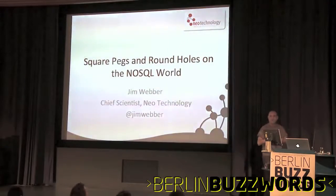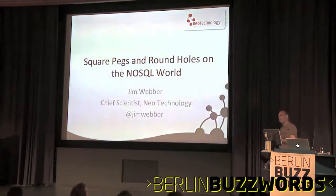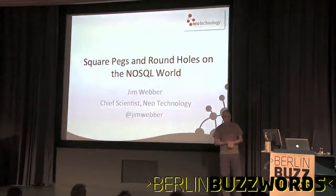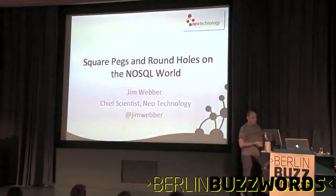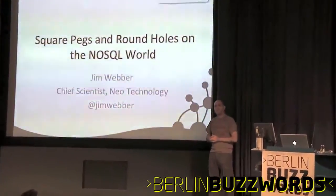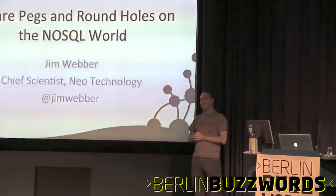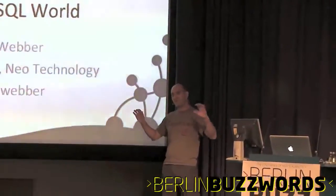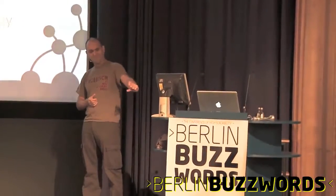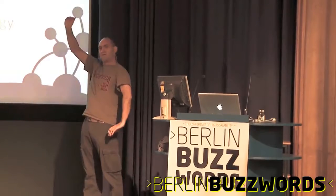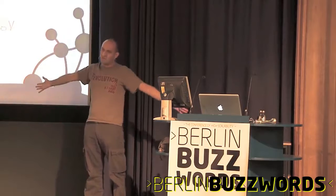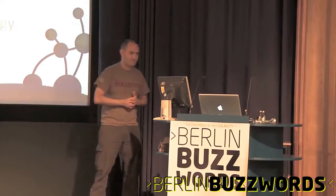Leonard Euler was the mathematician who, 275 years ago, invented graph theory, the branch of mathematics upon which graph databases like Neo4j are founded. Does anyone know how old the relational theory is? 42 years old. So you've got NoSQL, five or six years; the relational model, 42 years - which is a great geeky number - and then the mature model, graph theory, 275 years.